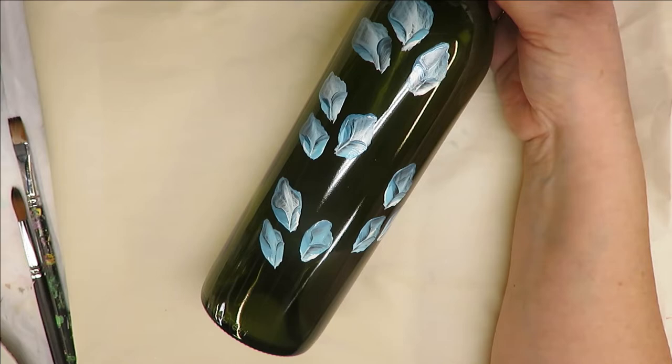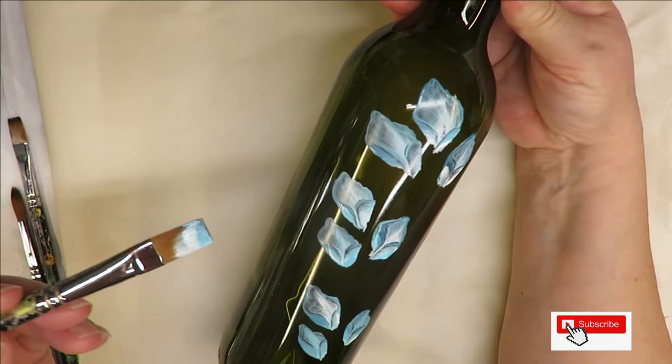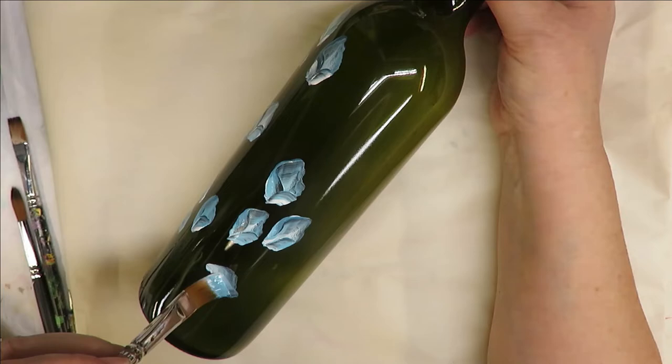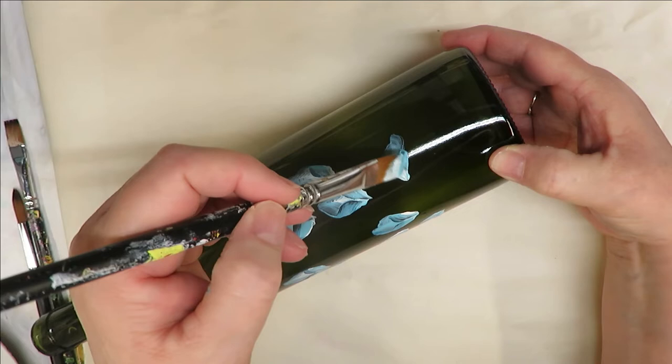I like to do odd numbers, so chances are maybe I'll even do a set going down this way. You can turn your bottle, obviously. It doesn't have to stay in one direction. That's one thing nice about painting on glass.